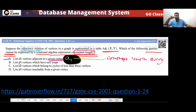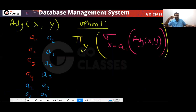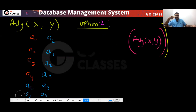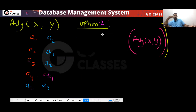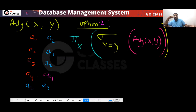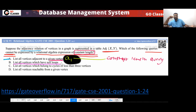For option B — list all vertices with self-loops — you will select from the table those rows where X is equal to Y, and then project X. This is very simple and again gives us a constant-length query for option B.